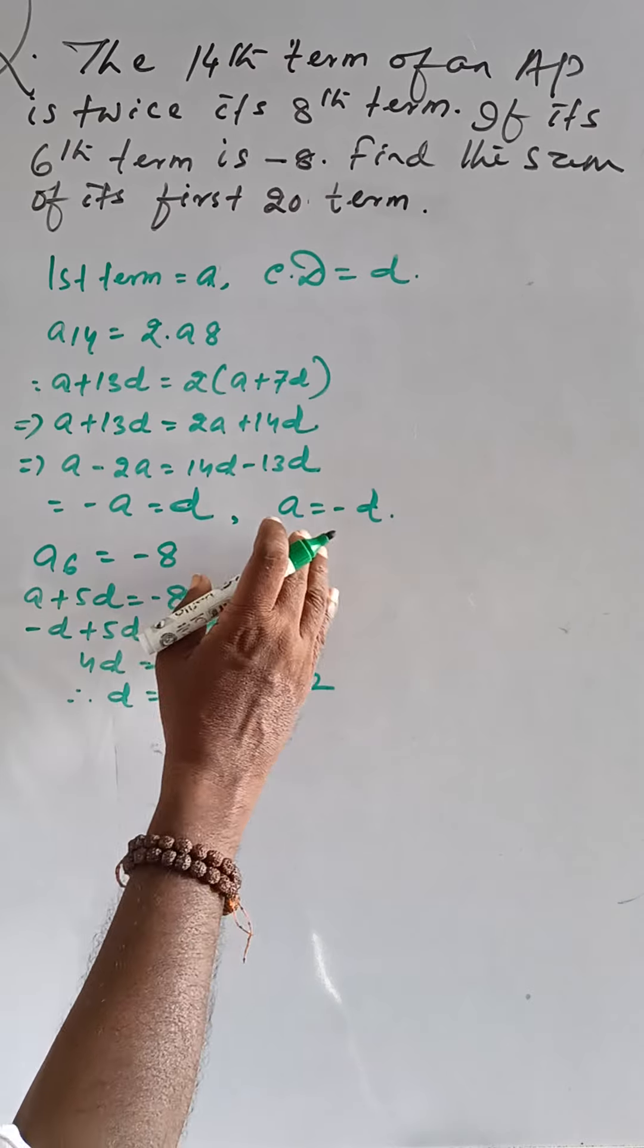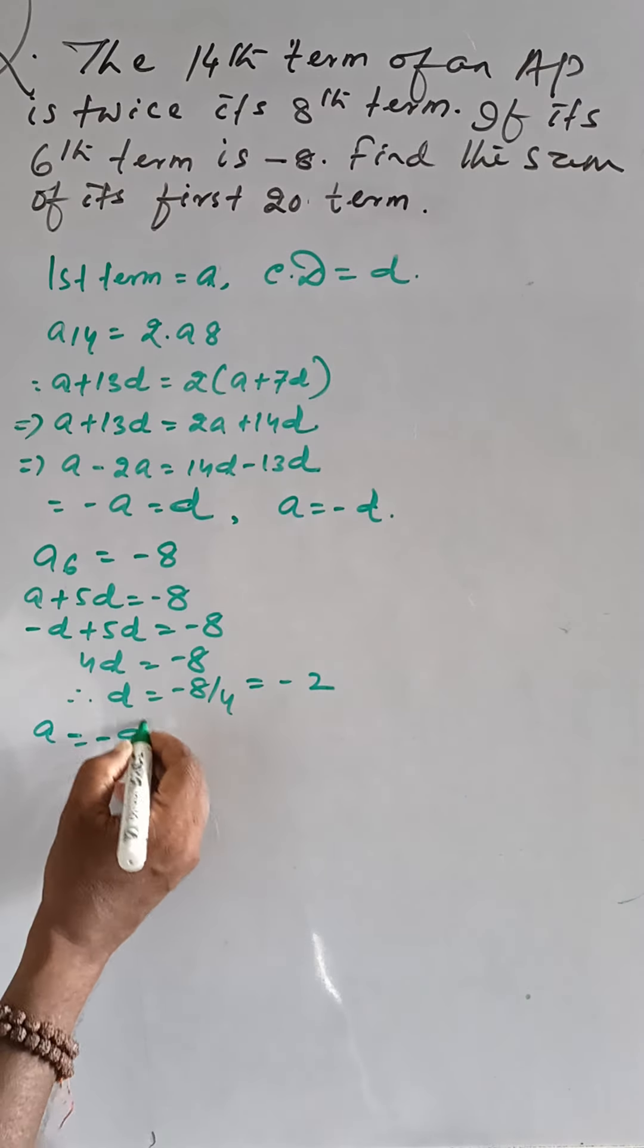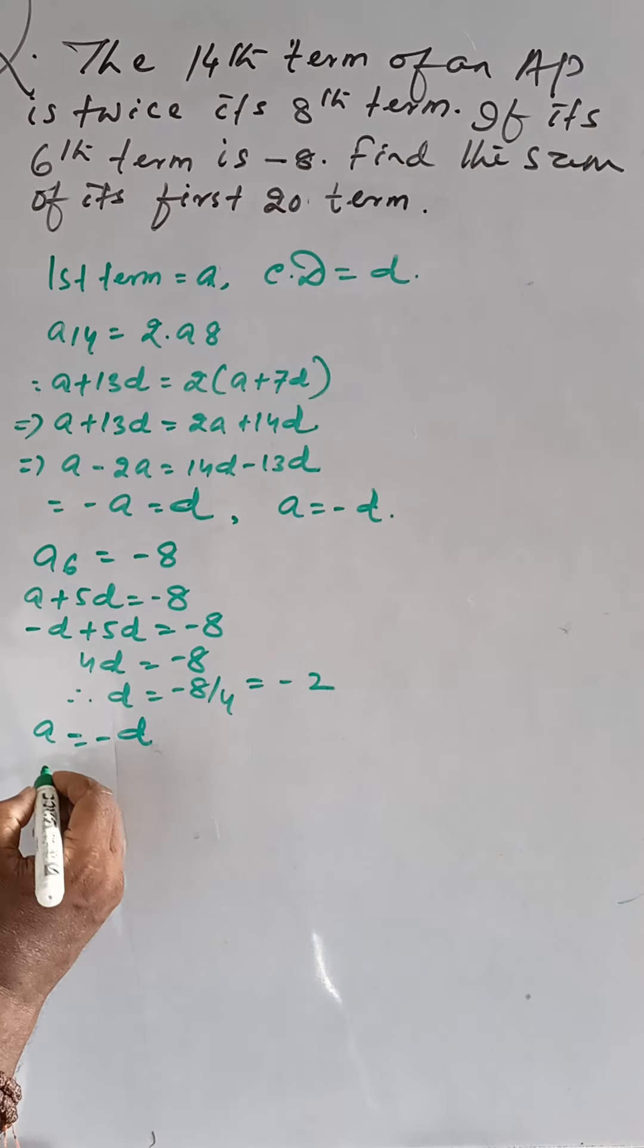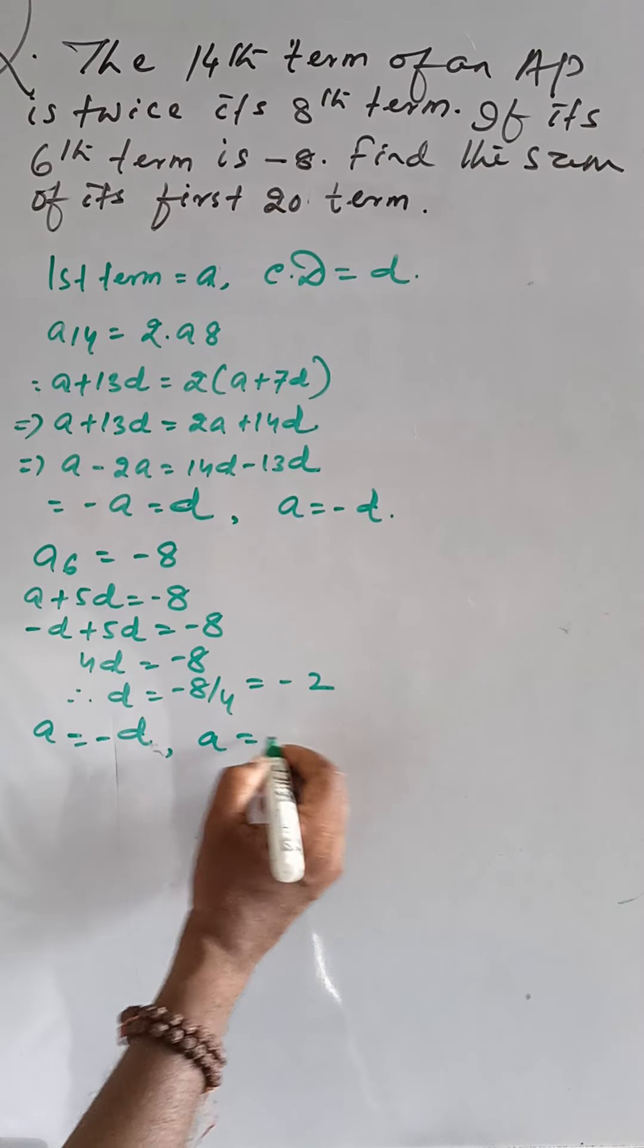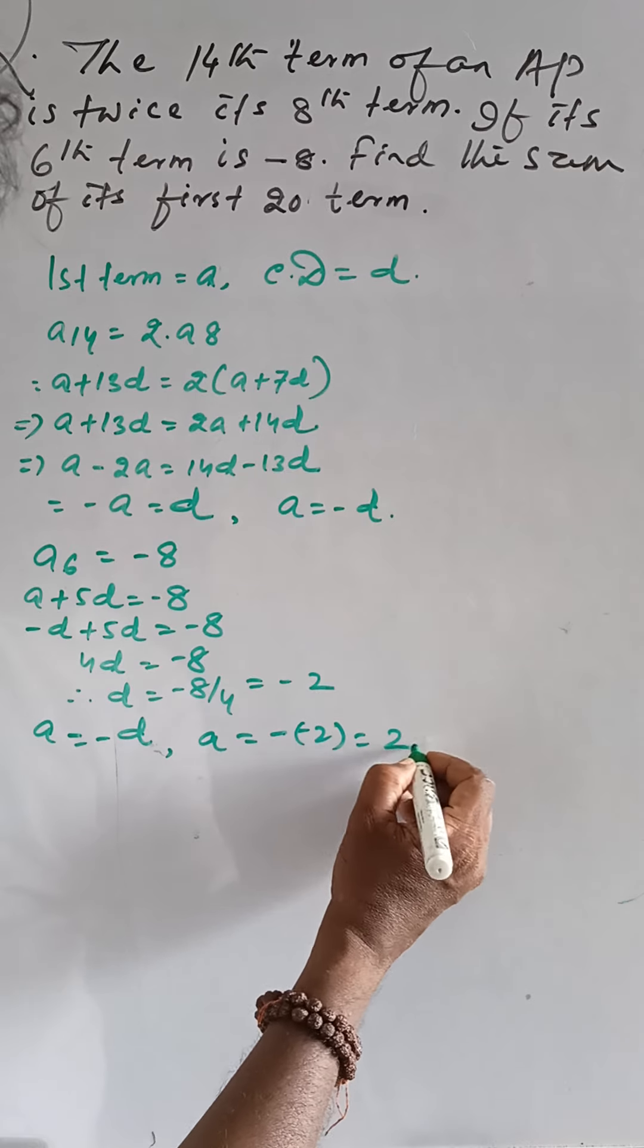Then putting this value here, A is equal to minus D means A is equal to minus minus 2, that is 2.